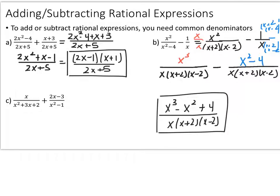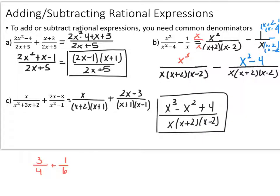Example C: x over x squared plus 3x plus 2 plus 2x minus 3 over x squared minus 1. The first step is to factor the denominators. The first denominator factors into x plus 2 times x plus 1, and the second factors into x plus 1 times x minus 1. You'll notice they both share an x plus 1, so it's not like example B where the denominators are completely separate.